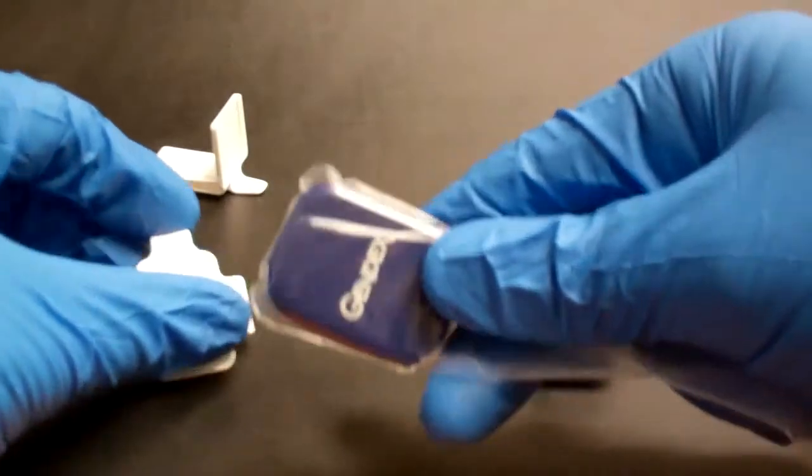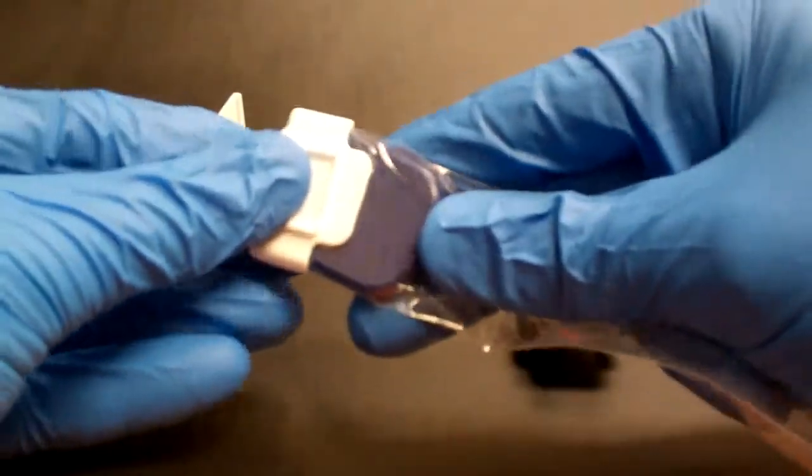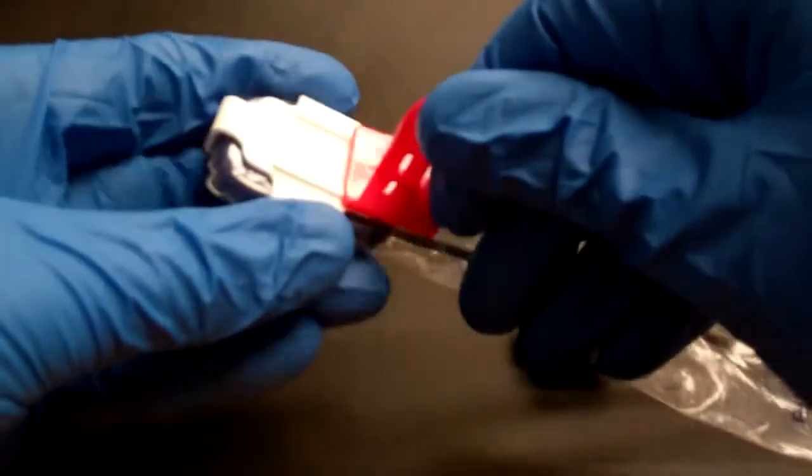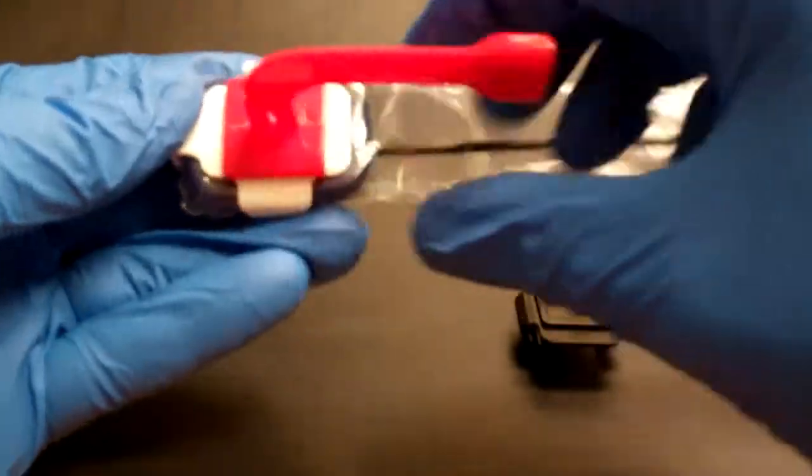So with the size 2 GENDEX GXS770 sensor, you would just slide the white base on. And for a horizontal bitewing, you would just slide on the bite piece like so.